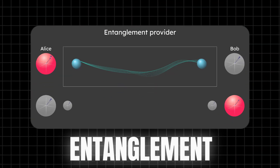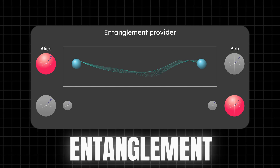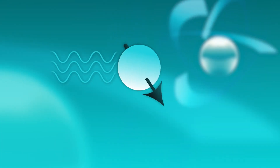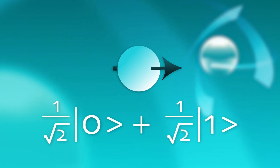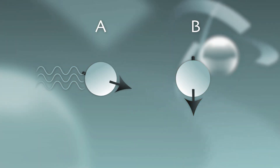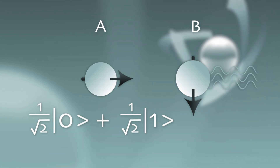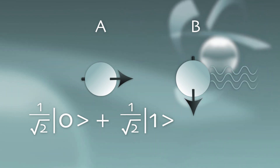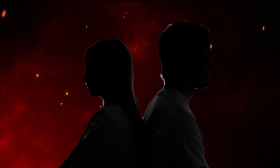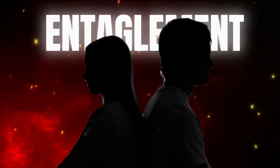Entanglement is another fascinating quantum phenomenon where qubits become interconnected, meaning the state of one qubit directly affects the state of another, regardless of distance. This property is crucial for quantum computing, enabling qubits to work together in ways classical bits cannot. Imagine having twins separated by continents who can still feel each other's emotions instantly — that's entanglement in a nutshell.